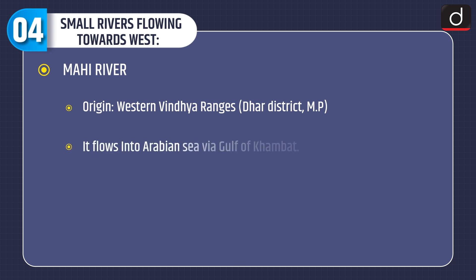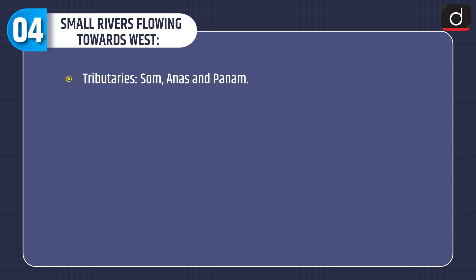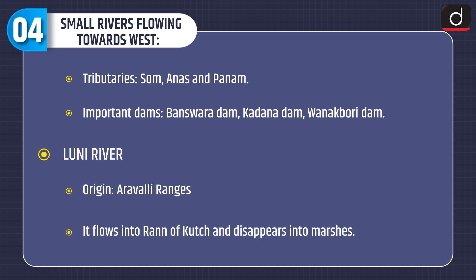Mahi river: Origin in the Western Vindhya Ranges, Dhar district, Madhya Pradesh. It flows into the Arabian Sea via the Gulf of Khambhat and crosses the Tropic of Cancer twice. Basin: Madhya Pradesh, Rajasthan and Gujarat. Tributaries: Som, Anas and Panam. Important dams: Banswara Dam, Kadana Dam and Vanakbori Dam.